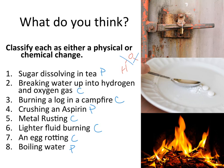Burning a log in a campfire: we're having a combustion reaction. In order to have something combust, you have to react it with oxygen, and that means the chemical bonds between the atoms and the molecules are also breaking. So that's a chemical change.